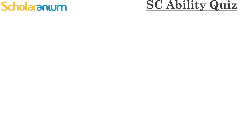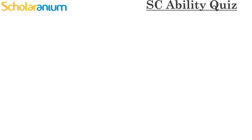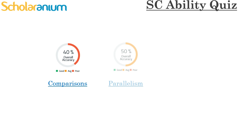Next, to figure out what exactly to focus on in SC, you should take an SC ability quiz and analyze the skill data for it. In this case, given the data, you will first focus on comparisons, then parallelism, and then verbs.